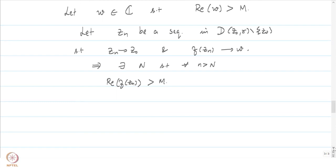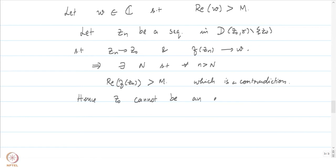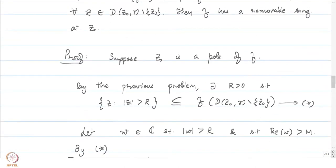Since f(z_n) converges to w, the real part of f(z_n) converges to the real part of w. Therefore, there is some N such that for all n > N, the real part of f(z_n) is greater than M — which is again a contradiction. Hence z₀ cannot be an essential singularity. Of the three possible isolated singularities, we have ruled out pole and essential singularity, so z₀ is forced to be a removable singularity.